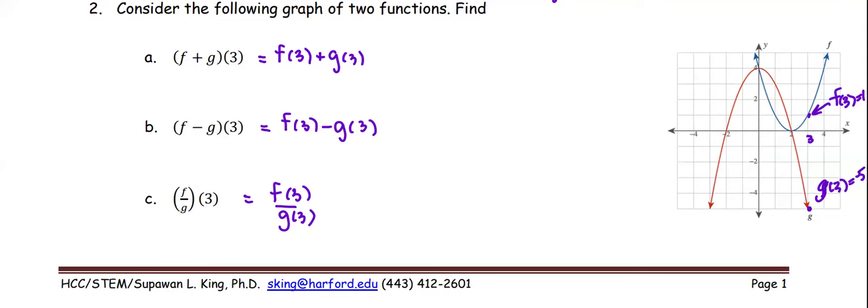So we take these two values into the problem. f at 3, we found it to be 1, the g at 3 is negative 5, so 1 plus negative 5 turns out to be negative 4.